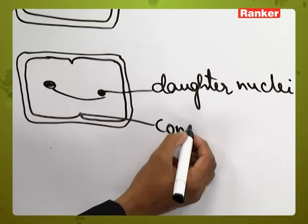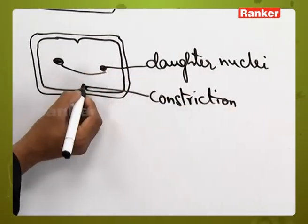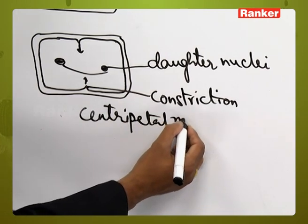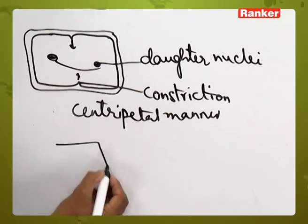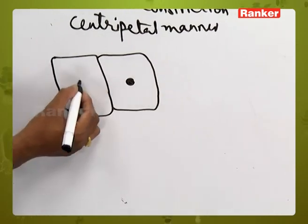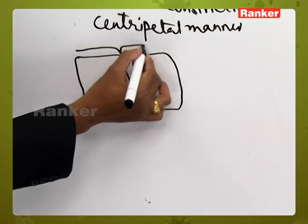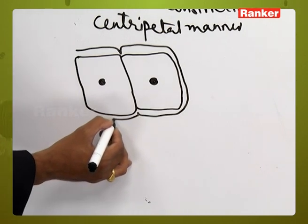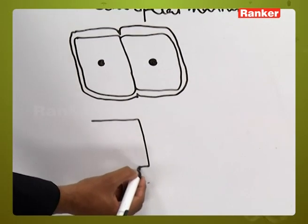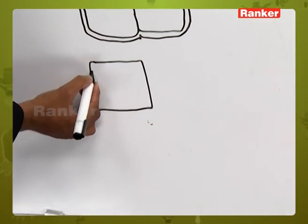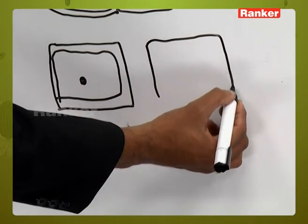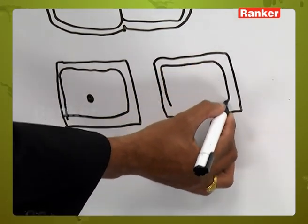A constriction starts on both sides and gradually moves towards the center in a centripetal manner — from periphery to center — dividing the cytoplasm into two equal halves. Since the nucleus has already been divided, two daughter protoplasms are formed. A constriction also starts in the cell wall, moving centripetally, dividing the bacteria into two daughter bacteria. The two daughter bacteria are structurally and morphologically similar to each other and to the parent cell, and will grow into independent bacterial organisms.